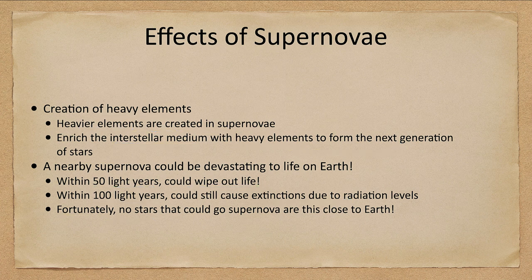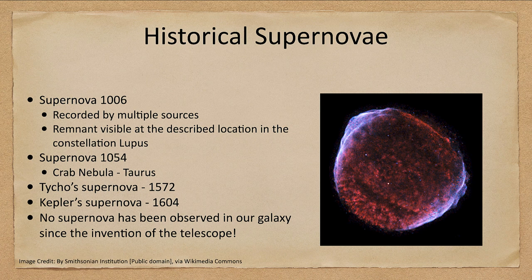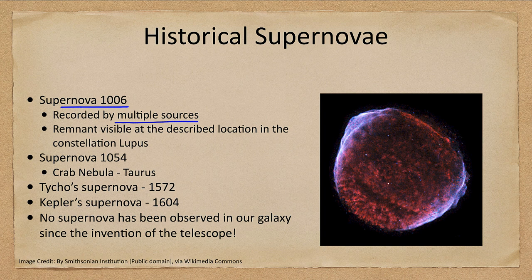What do we see when we observe a supernova? We see a supernova remnant. Here are some historical supernovae — there is the supernova of 1006, recorded in multiple locations, and we can see the remnant visibly expanding outward for over a thousand years in the constellation Lupus. The material continues to expand outward into space, enriching the interstellar medium. It is still mostly hydrogen and helium, but enriched in heavier elements which will eventually become seed material for future stars.